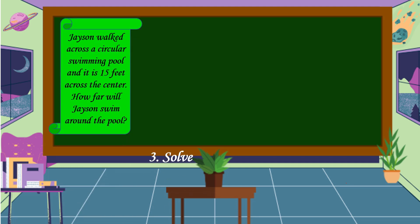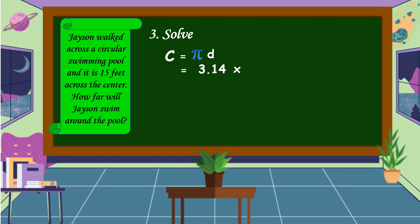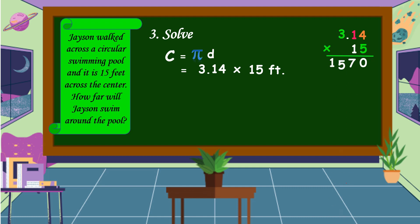We have already a plan, so let's carry out the plan and solve the problem. The formula in finding the circumference is C equal to pi times diameter. The approximate value of pi is 3.14 and the diameter is 15 feet. Let's find the product: 3.14 times 15. 5 times 4 is equal to 20. Write 0, regroup 2. 5 times 1 is equal to 5, plus 2 is equal to 7. 5 times 3 is equal to 15.